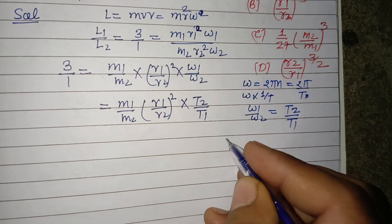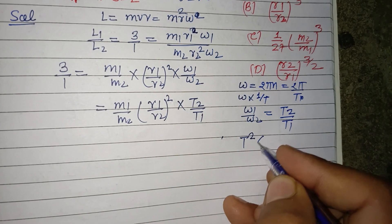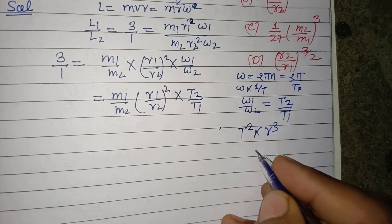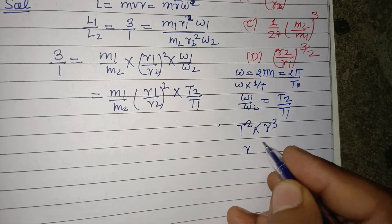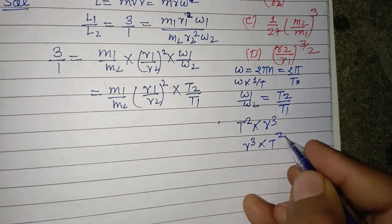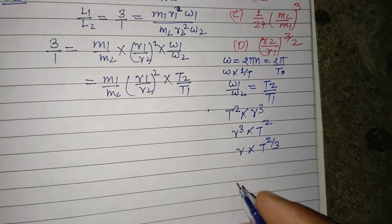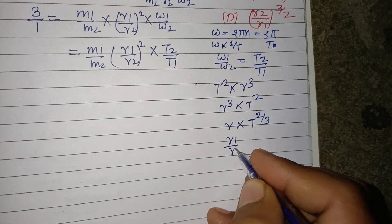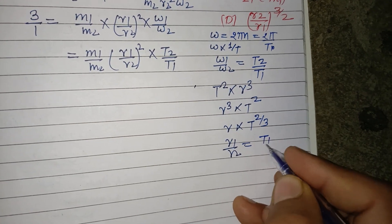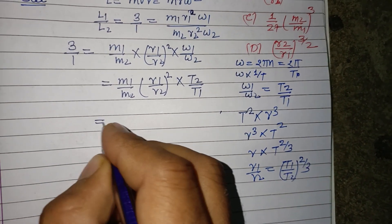Now by Kepler's law, we know that T² is directly proportional to R³. Therefore R1 upon R2 equal to T1 upon T2 to the power 2/3. So putting this value...